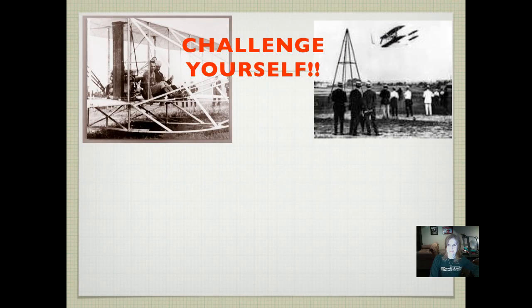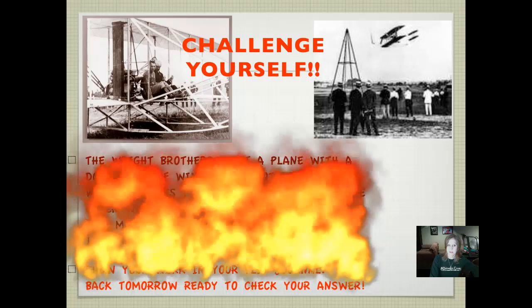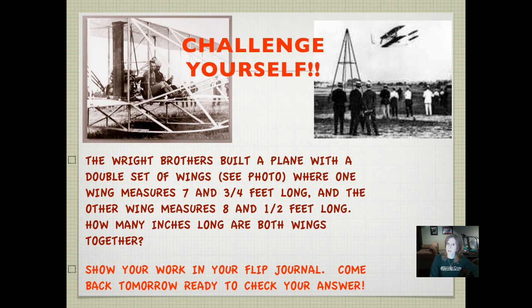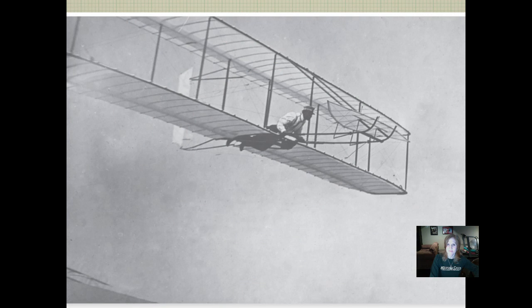It's time to challenge yourself. The Wright brothers built a plane with a double set of wings. You can see them in all the photos. Where one wing measures 7 3/4 feet long and the other wing measures 8 1/2 feet long. How many inches long are both wings together? So you're going to have to do some fancy converting and figuring things out right there. Show your work in your flip journal, have some fun figuring this out, and come back tomorrow ready to check your answer. I love this picture so I had to stick it in there for you. I hope that someday I'll get to fly like this. I think that'd be cool.